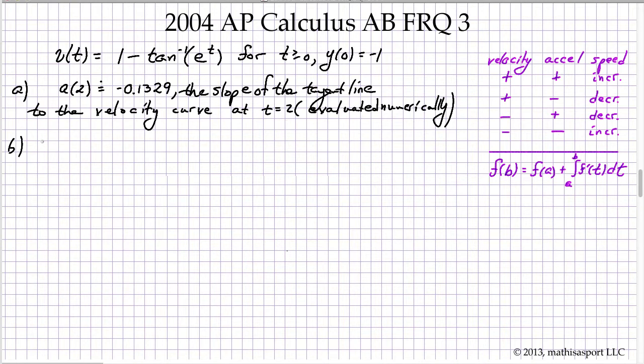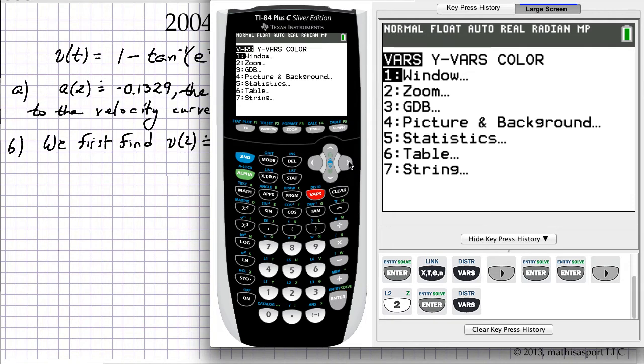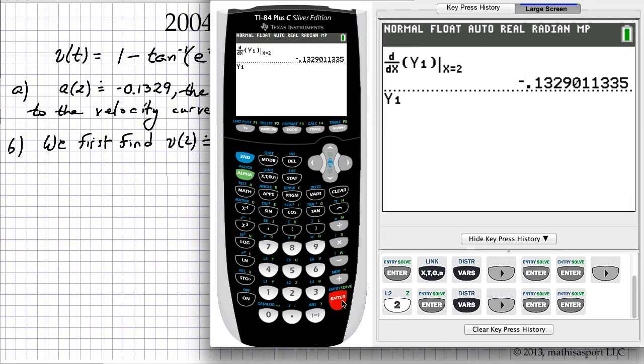Well, we've already found the acceleration, so we'll just say we first find v of 2, which is approximately equal to... Here, I'm just evaluating the function because the function that we put in was the velocity function.